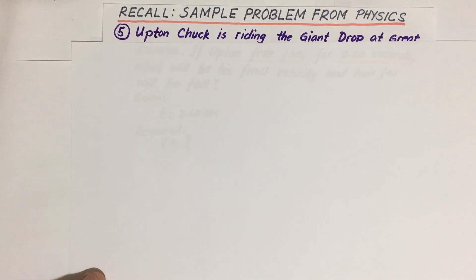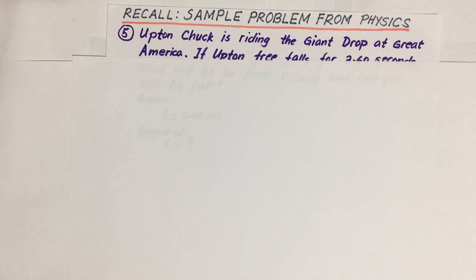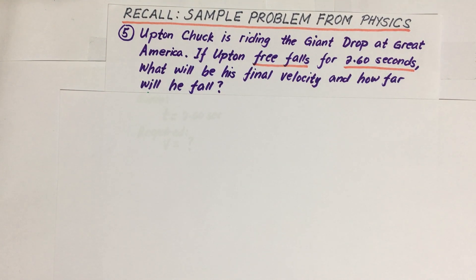Upton Chuck is riding the Giant Drop at Great America. If Upton free falls for 2.60 seconds, what will be his final velocity and how far will he fall? Okay, so we are given here what's called free fall.